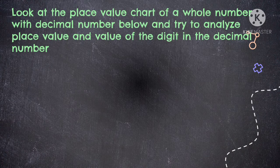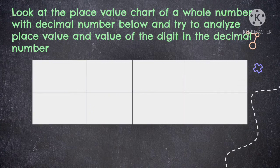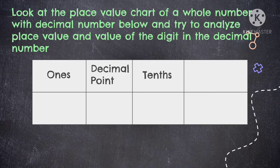Look at the place value chart of a whole number with decimal number below and try to analyze the place value and value of the digit in the decimal number. So we have this place value chart: ones, decimal point, tenths, and hundredths. The whole number and the decimal number are separated by the decimal point. The place value of the decimal number starts at tenths, hundredths, and so on.